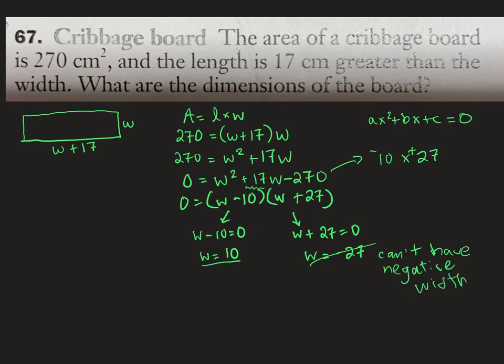Which leaves W equals 10 as our only answer. What was the question asking? What are the dimensions of the board? So if we draw our board, 10 would be the width. Units would be centimeters. And then W plus 17, so 10 plus 17, 27 centimeters would be the length.